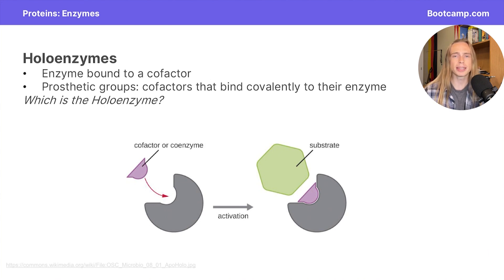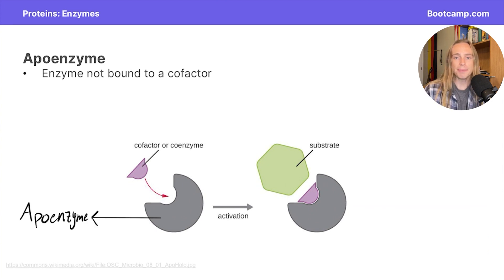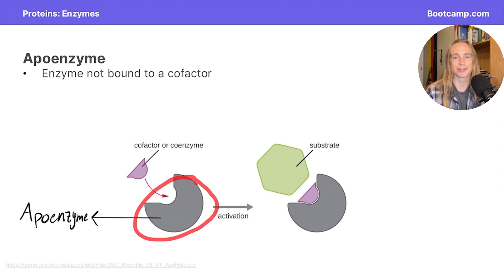In the image below, do you think you could label which one is a holoenzyme? The one on the right, which is bound to its cofactor, is known as a holoenzyme. An apoenzyme, then, is an enzyme that is not bound to its cofactor, as we can see in this image.